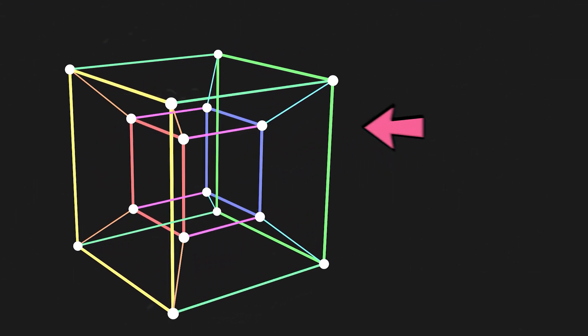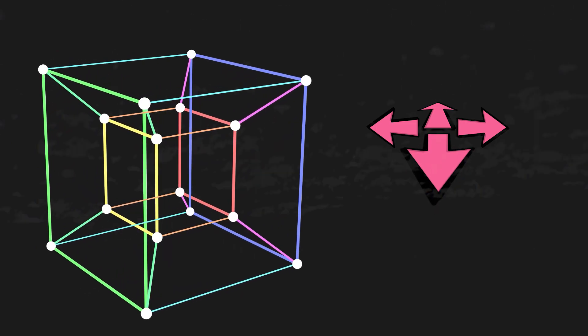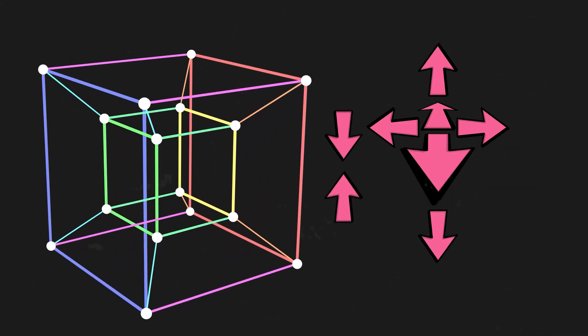It has eight directions, left, right, forward, backward, up, down, inward and outward. But how do we make sense of this?